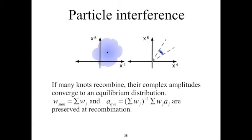If many knots recombine, their complex amplitudes will converge to an equilibrium distribution. Again, the weight w_sum equal to the sum of wj, and the weighted average amplitude equal to (sum of wj)⁻¹ times the sum of wj·aj, are preserved quantities at recombination. In the diagram, we portray an initial distribution of knot amplitudes and assume that those knot amplitudes correspond to knots that are continually recombining with each other. After a period of recombination, the knot amplitudes converge to a distribution shown on the right. The total weight w_sum is preserved, and the weighted average amplitude indicated by the black circle is also preserved.